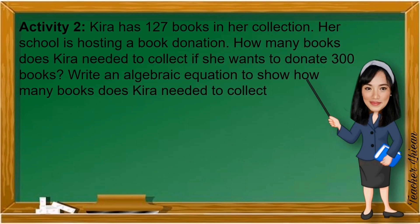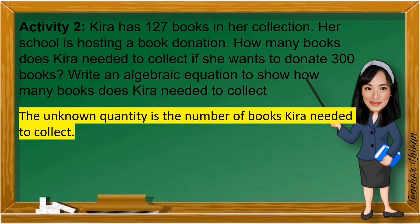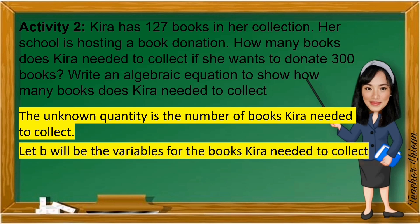Activity 2. Kira has 127 books in her collection. Her school is hosting a book donation. How many books does Kira need to collect if she wants to donate 300 books? Write an algebraic equation to show how many books does Kira need to collect. The unknown quantity is the number of books Kira needed to collect. And let B will be the variable for the books Kira needed to collect.